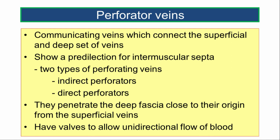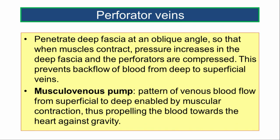Moving on to the perforator veins — these are communicating veins which connect the superficial and the deep set of veins. They show a predilection for the intermuscular septa. There are two types: indirect perforators and direct perforators. They penetrate the deep fascia close to their origin from the superficial veins and have valves which allow unidirectional flow from superficial to deep veins. They penetrate the deep fascia at an oblique angle so that when muscles contract, pressure increases and the perforators are compressed, preventing backflow from deep to superficial veins.